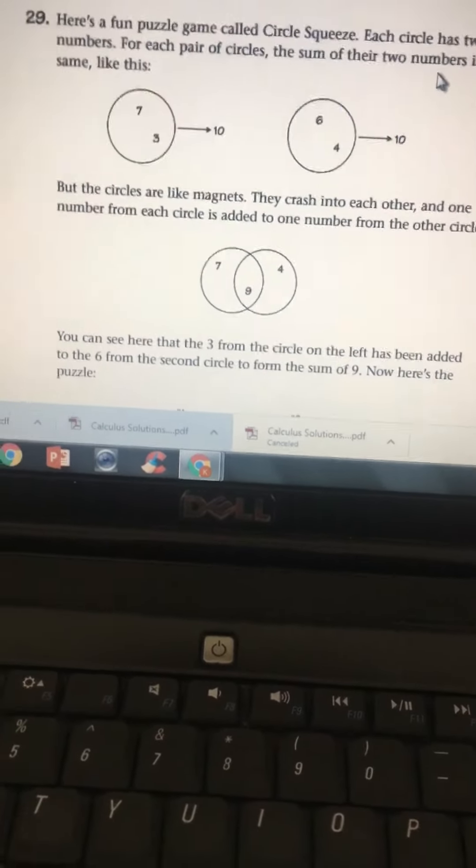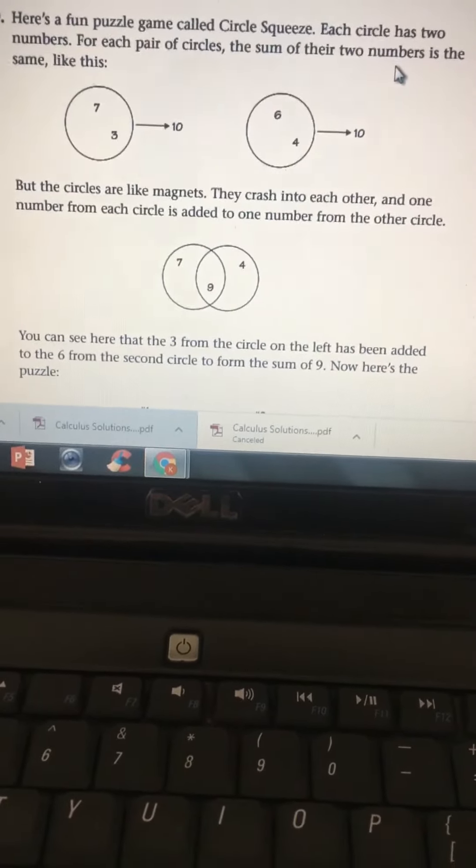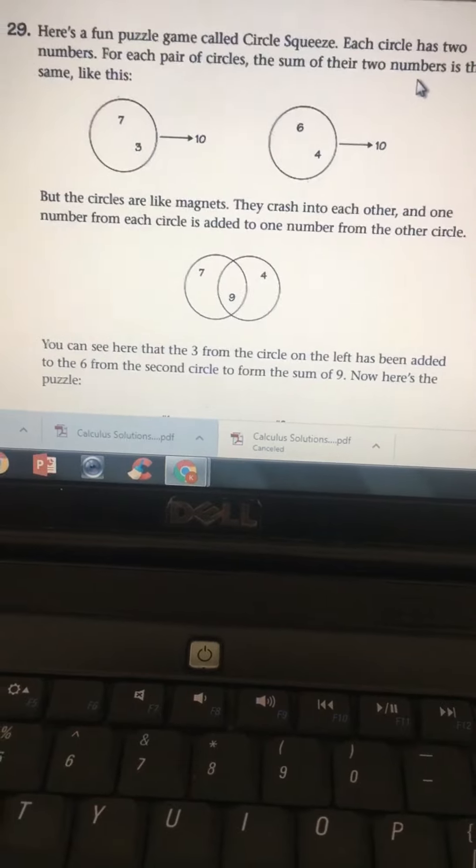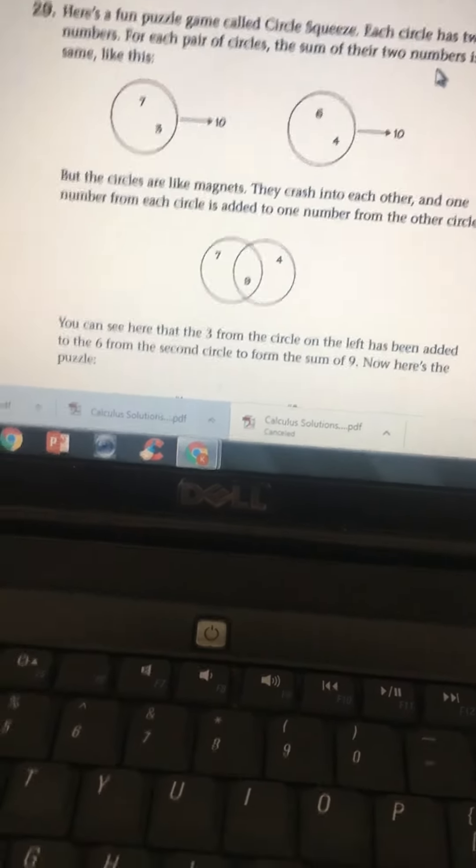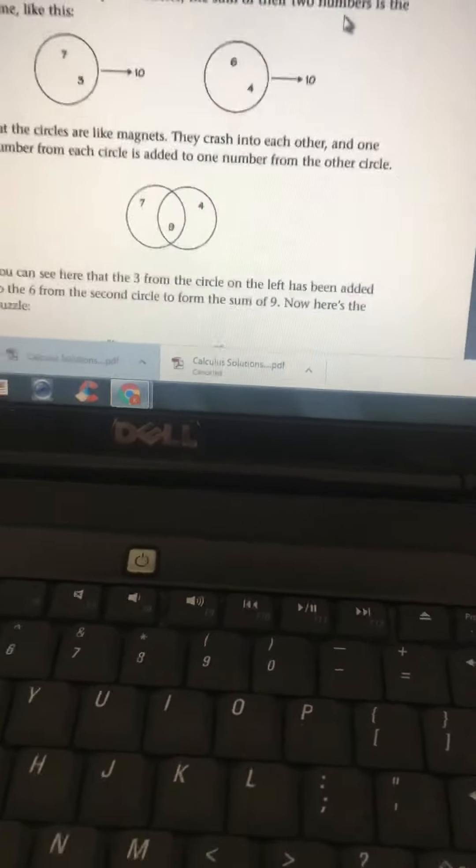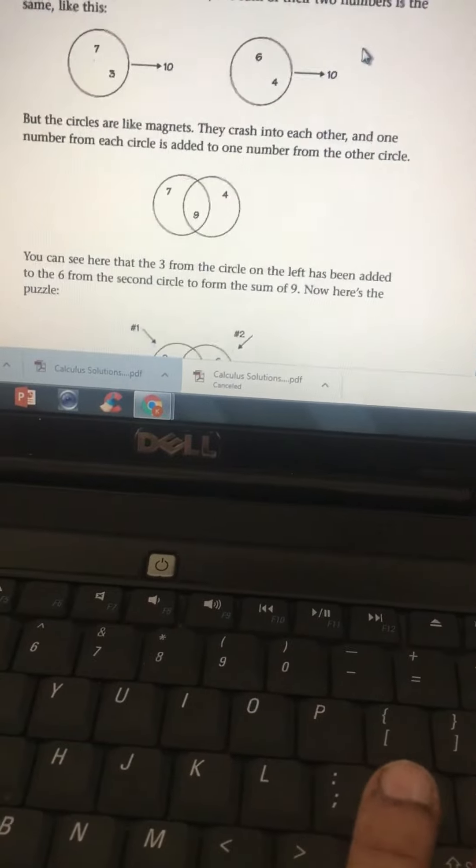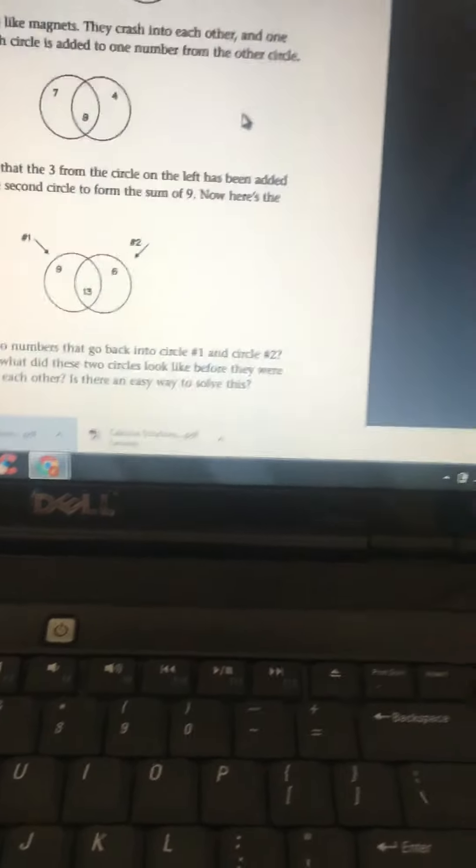Like 3 is added to the second circle's number 6, that will give 9. You can see here the 3 from the circle on the left has been added to the 6 from the second circle to form the sum of 9.